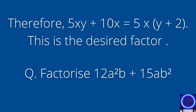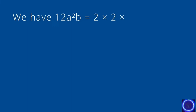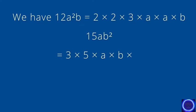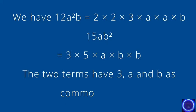Next question: factorize 12a squared b plus 15ab squared. In the given expression there are two terms. Try to find out their common factors, then take that common factor out so that the given expression can be factorized. 12a squared b can be written as 2 into 2 into 3 into a into a into b, and 15ab squared can be written as 3 into 5 into a into b into b.